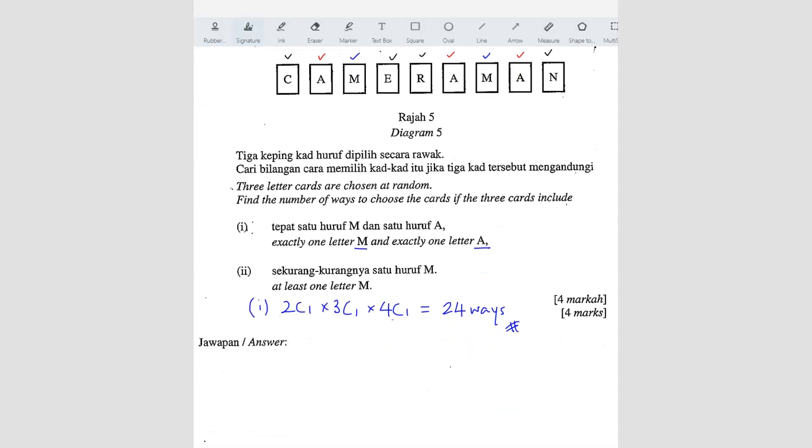Next, at least one letter M. At least. It says at least. What does that mean? That means we got two situations. At least means minimum, right? Minimum 1. So that means I can have 1M or I can have 2M. So you can do them separately.